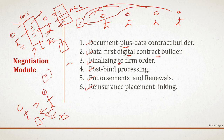Once all acceptances have been received, if required, the platform will facilitate the signing-down of the risk. If the risk is placed more than 100%, the signing-down process reduces the risk proportionally to all participants so that everyone holds the right proportion. The final agreed version of the insurance contract is created as a PDF and saved in the central repository for all parties to view.